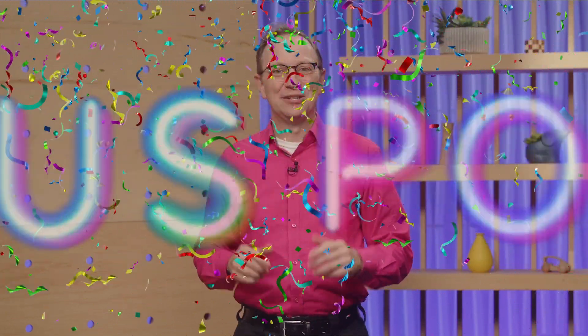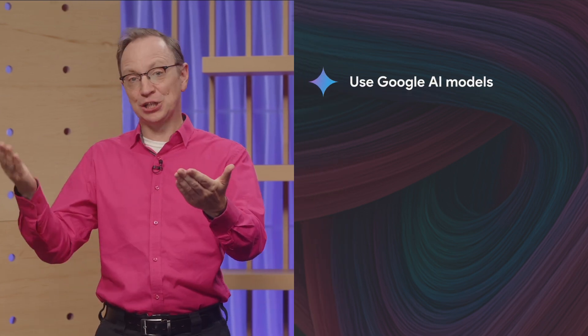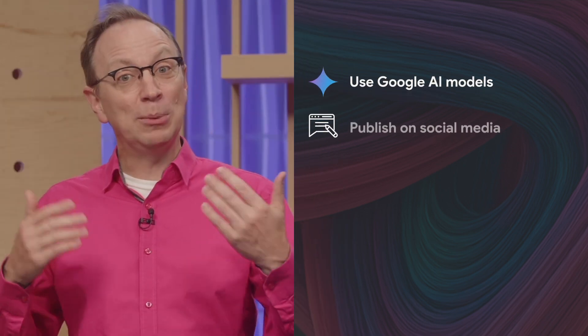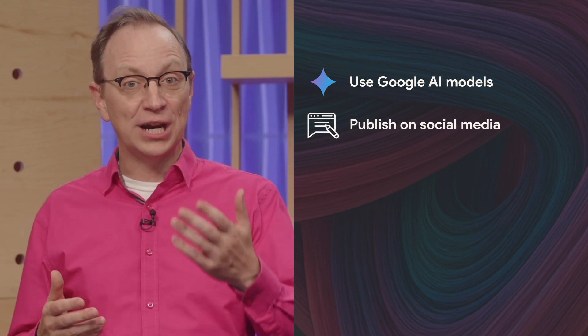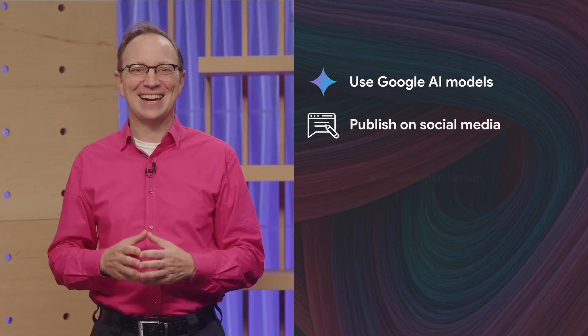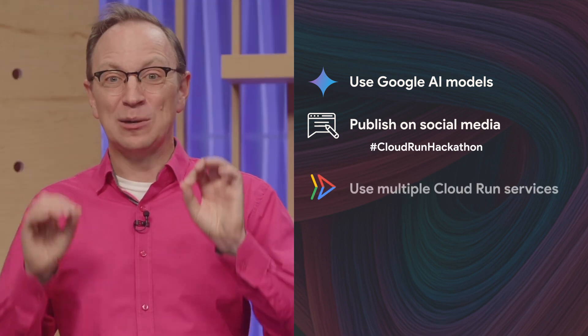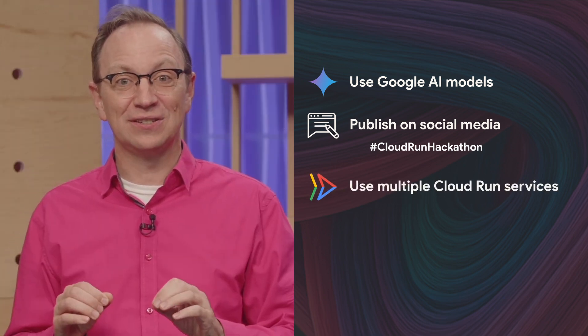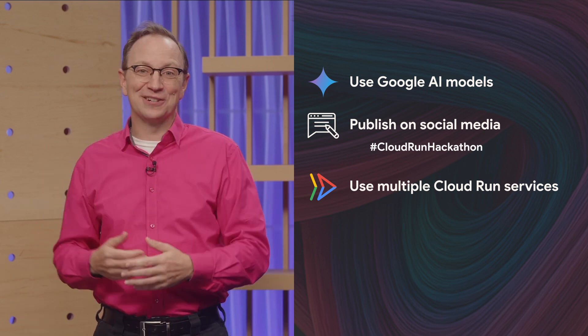And wait — this time we have something very exciting: bonus points! You can boost your score by: one, using a Google AI model like Gemini or Gemma; or two, publishing a blog post about your project, or sharing it on social media with hashtag Cloud Run Hackathon; or three, deploying multiple Cloud Run services or jobs or worker pools, like a separate front-end and back-end for example.